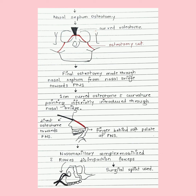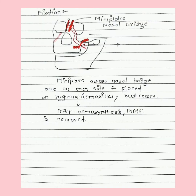A surgical splint is used to keep this in occlusion. Mini-plate fixation is done across the nasal bridge and the zygomaticomaxillary buttress — one on each side. After osteosynthesis occurs, this fixation is removed.